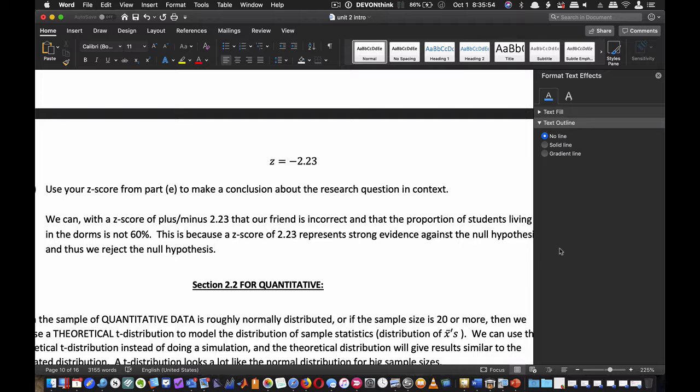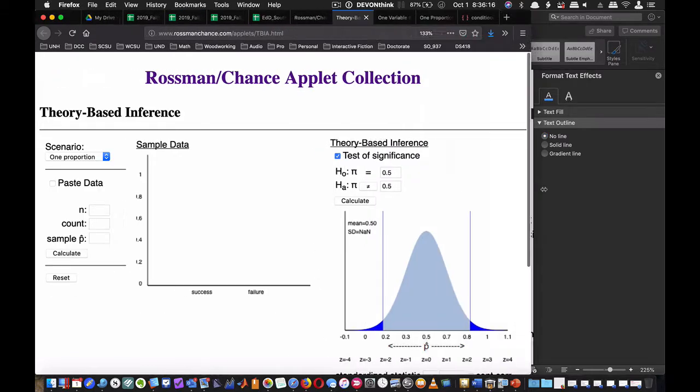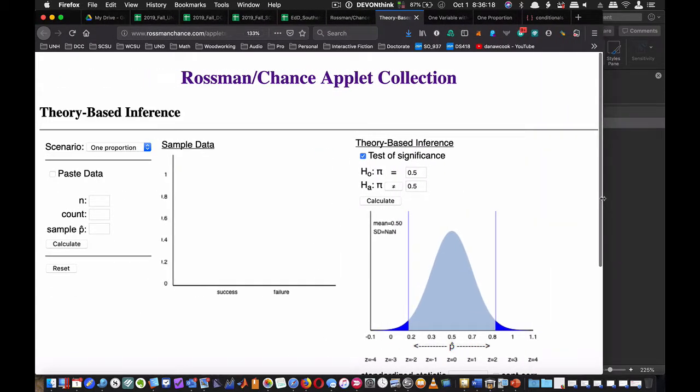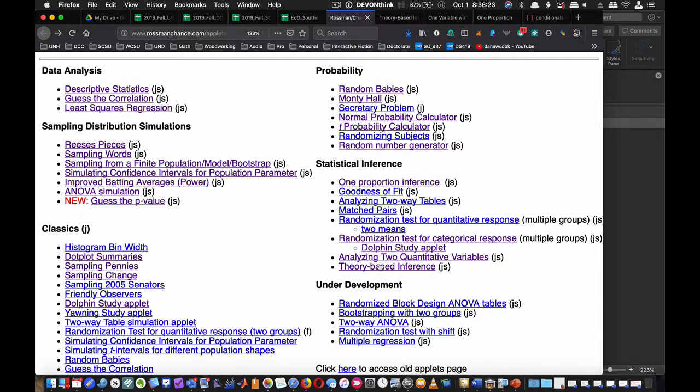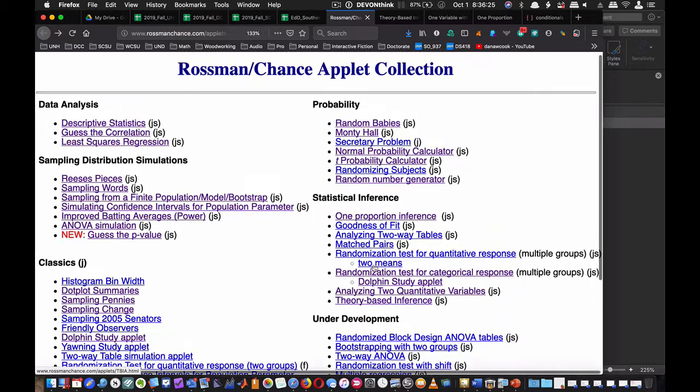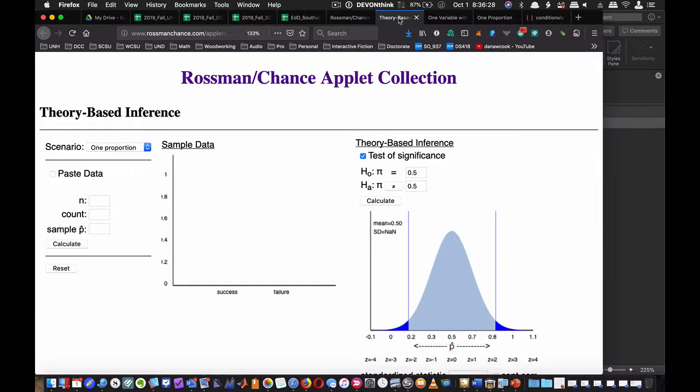Sorry about the jumping around on screen. The expectation is that you can do these calculations by hand. But I'll also show you how to do this in the applet. I'm using the Theory-Based Inference applet, which is the bottom selection on the page of applets you have a link to.